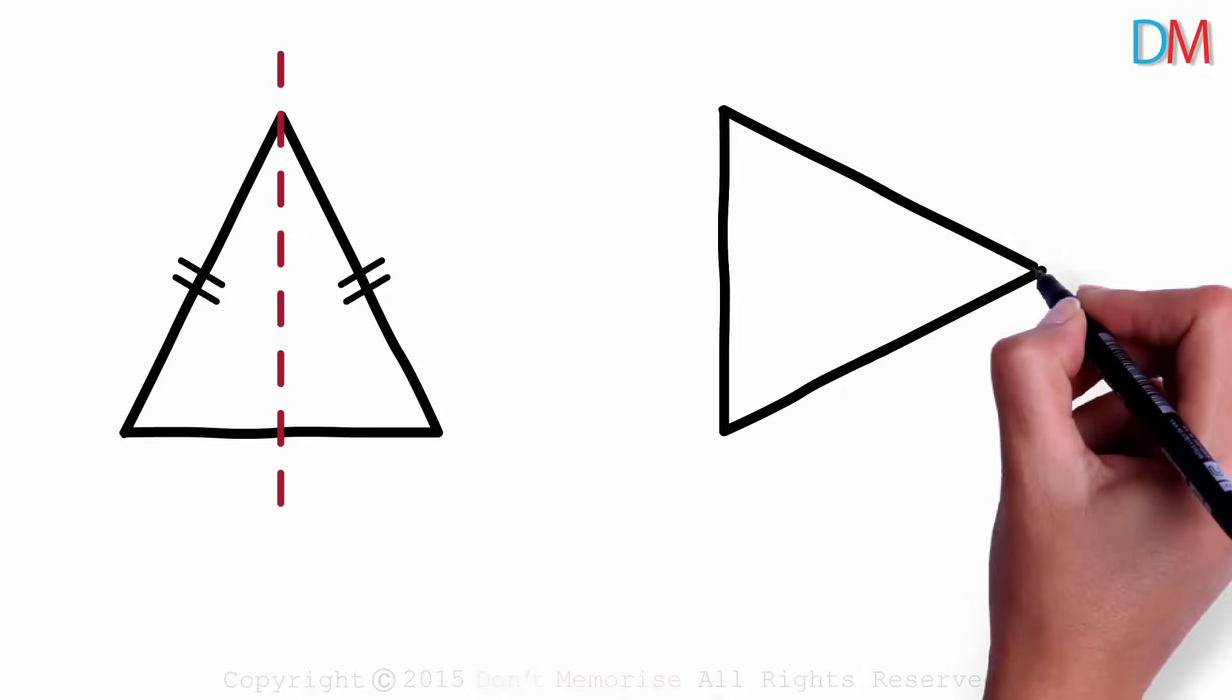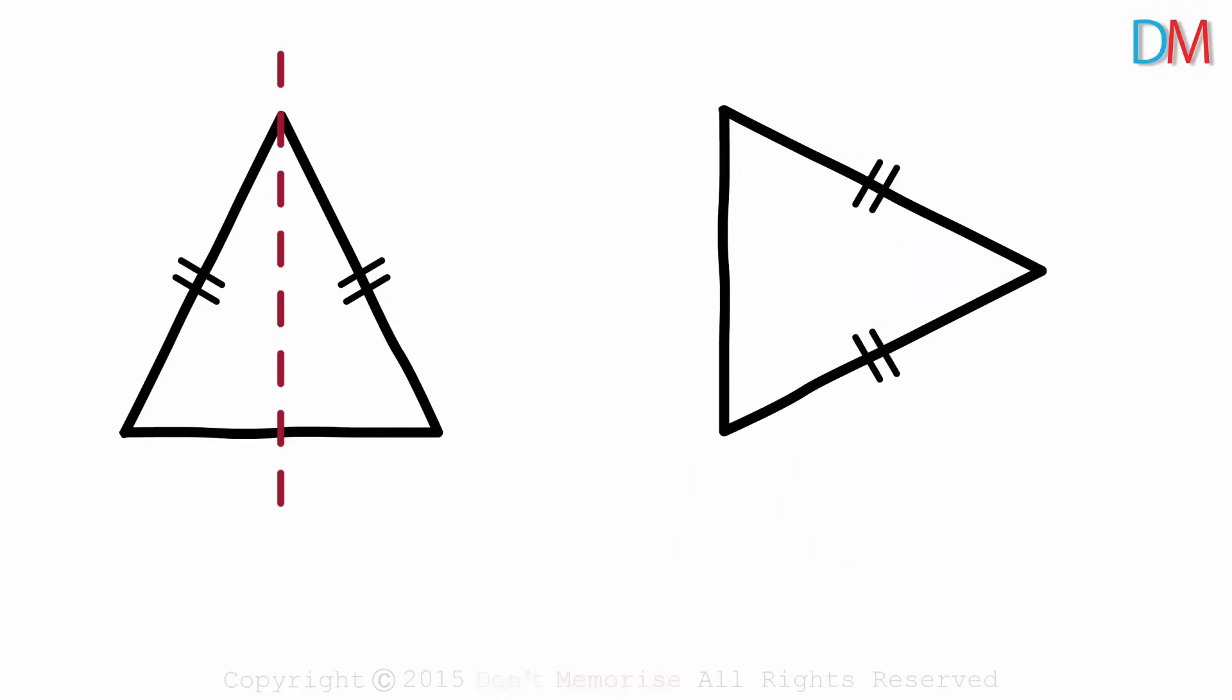Now let me give you another figure. I draw the isosceles triangle this way and ask you the same question. How would you divide the triangle into two parts such that both the parts match exactly when they are folded along a line?